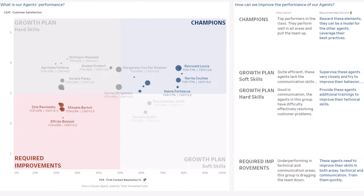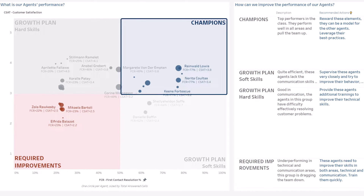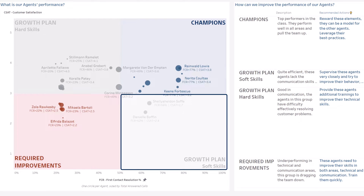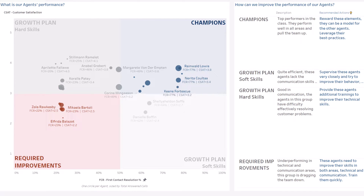Here you can find a classification of your agents. On the top right, your top agents — they have a high rate of first contact resolution and customers are very satisfied. At the bottom right, agents who are good at first contact resolution but with a low level of customer satisfaction. You might want to provide them with soft skills training.